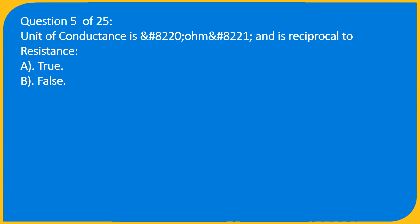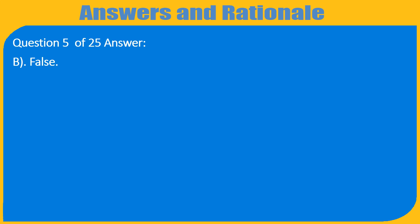Question 5 of 25: Unit of Conductance is "Siemens" and is reciprocal to resistance — A. True, B. False. Answer: B. False.